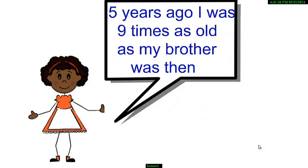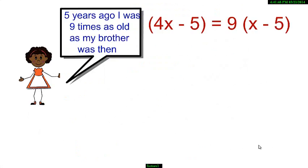We also know that 5 years ago Reno was 9 times as old as her brother was then. So, can we say 4x minus 5 is equal to 9 into x minus 5? Opening the brackets we get 4x minus 5 is equal to 9x minus 45.